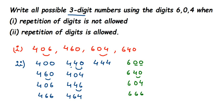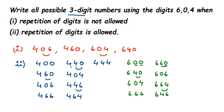Fixing the second digit as 6: we get 6-6-0, interchange to get 6-0-6. With the third digit as 4: 6-6-4, interchange to get 6-4-6. The last combination not yet repeated is 6-4-4. So with 6 as the first digit, we again get nine combinations.